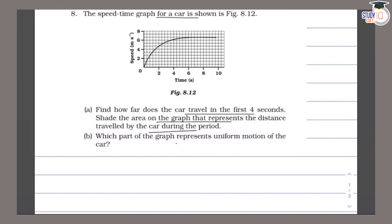What do we need to do in the first 4 seconds? We need to shade the area. In the second part, we need to know which part of the graph represents the uniform motion of the car.